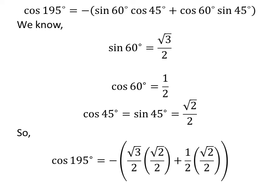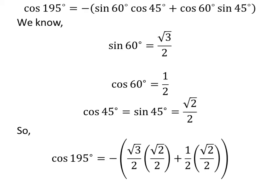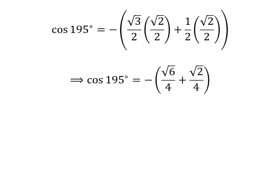We get cosine of 195 degrees is equal to minus square root of 3 over 2 times square root of 2 over 2, plus one half times square root of 2 over 2. Straight multiplication gives us cosine of 195 degrees is equal to minus square root of 6 over 4 plus square root of 2 over 4.